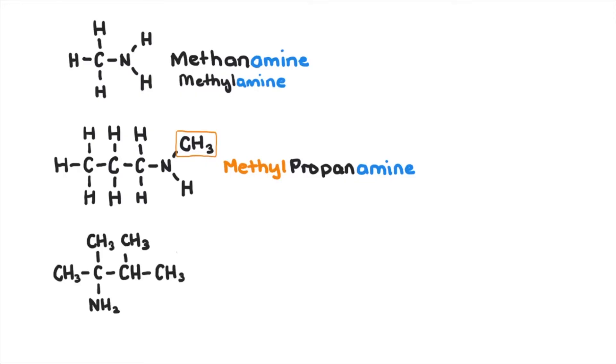Okay, next level. The longest chain is butane, drop the E and replace it with amine. It also contains a methyl group here and here. Since the amine is given priority, we'll number the carbons giving it the lowest possible position. So this becomes 2,3-dimethyl-2-butanamine.